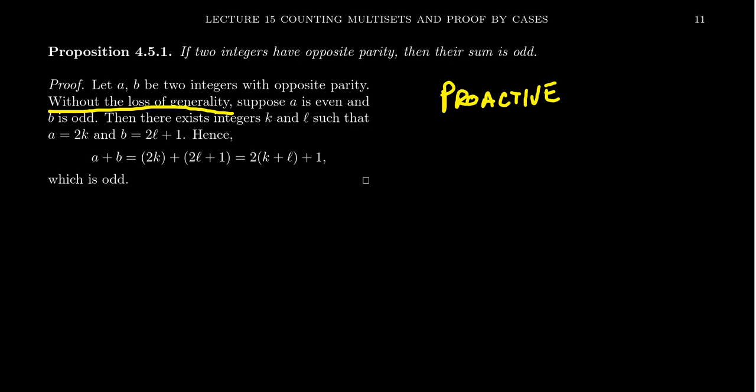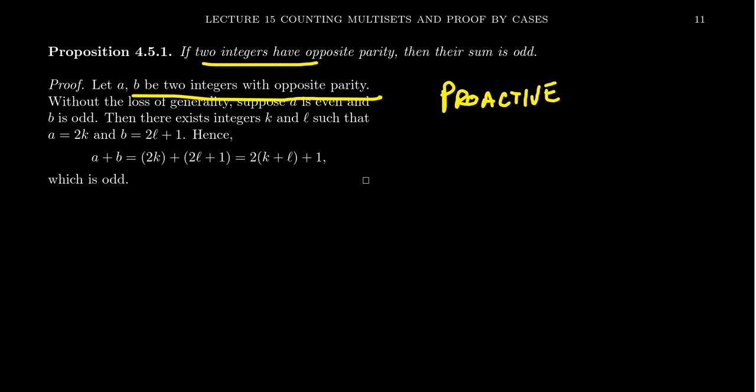Without loss of generality means we are going to consider multiple similar cases at the same time. Because they're so similar, they don't require different proofs. We're about to make an additional assumption — in this case, that a is even and b is odd — but even though we're making that assumption, it does not cause us to lose any generality in our argument. Our argument is still just as general, even though we're adding an assumption for the sake of convenience.